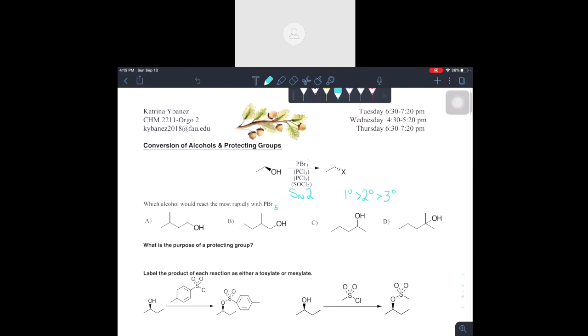So knowing what we know, we already don't like D because this is a tertiary, we don't like bulky, bye bye. So now we are left with two primaries and one secondary.